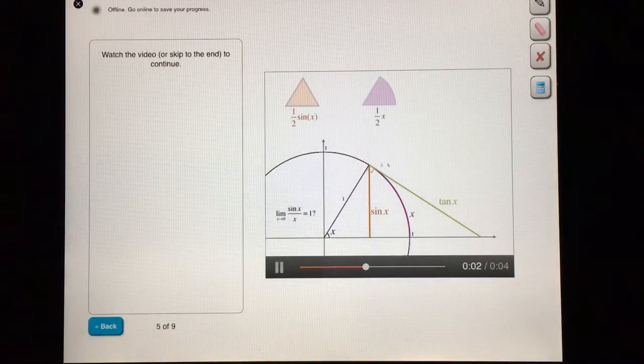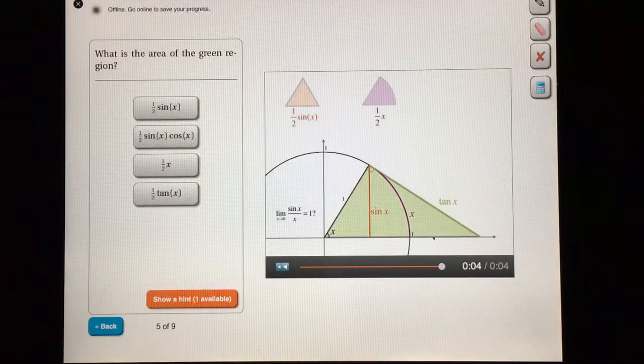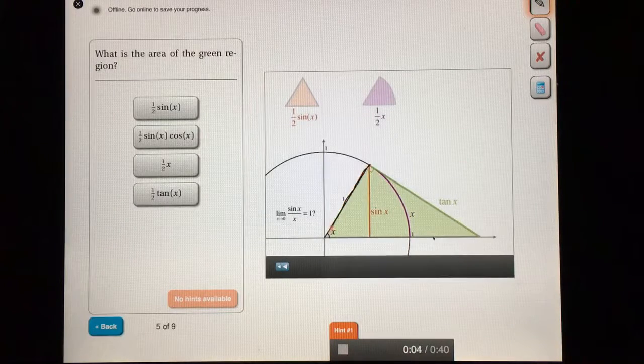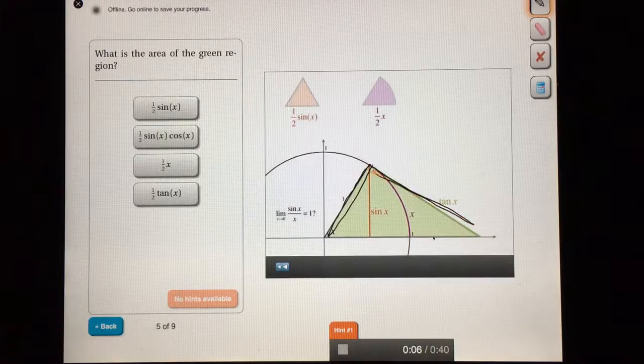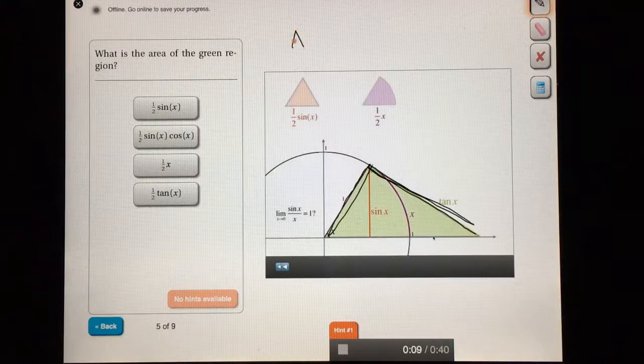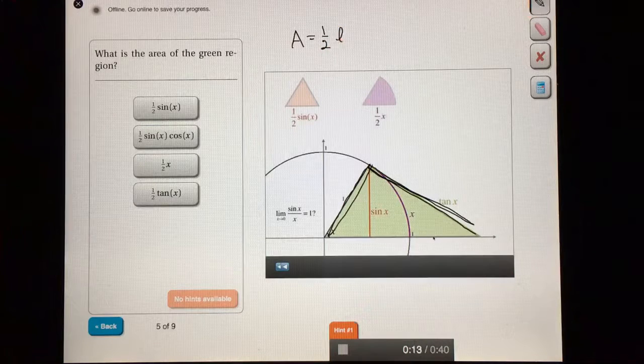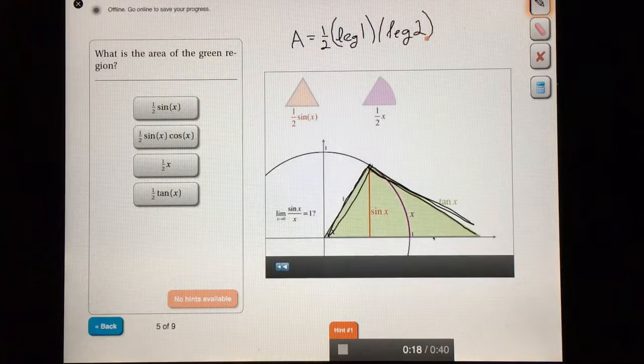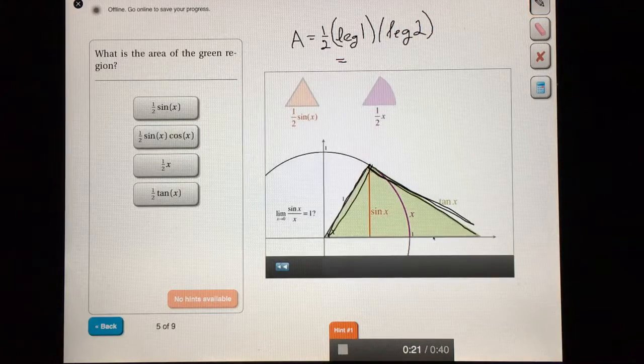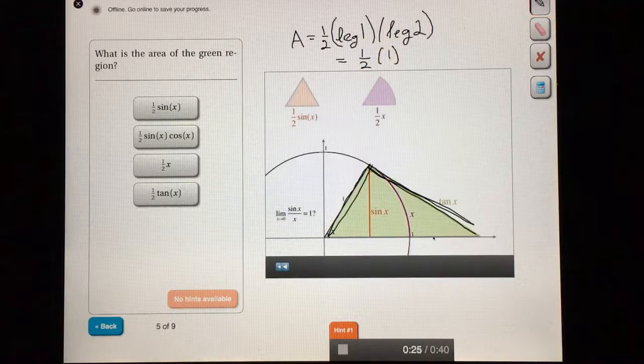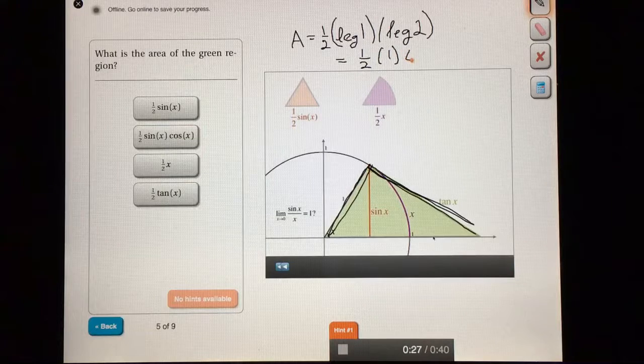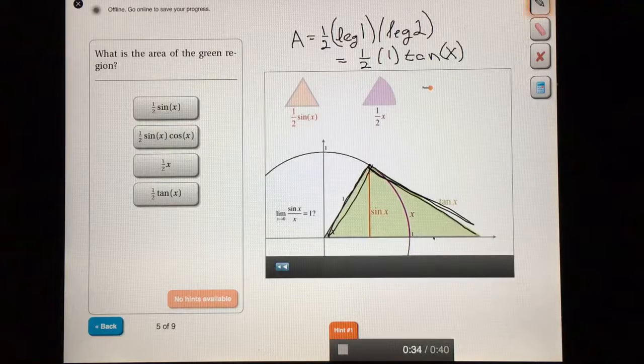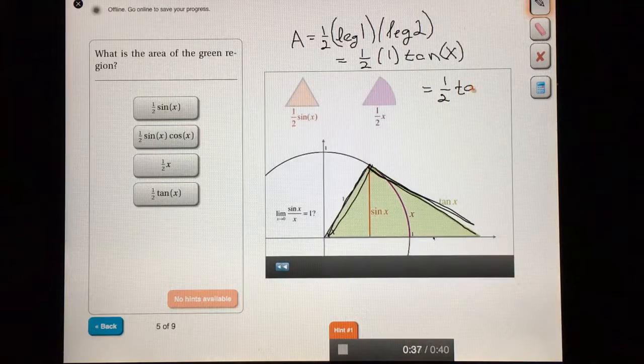Last one. What's the area of this green right triangle? The green right triangle has legs one and tangent of x. The area of a right triangle is one-half times leg one times leg two, because the legs can be thought of as a base and a height. Leg one is one, so I'll write that as one-half times one, and leg two is the tangent of theta, or the tangent of x here. Putting that together gives us an area of one-half tangent x.